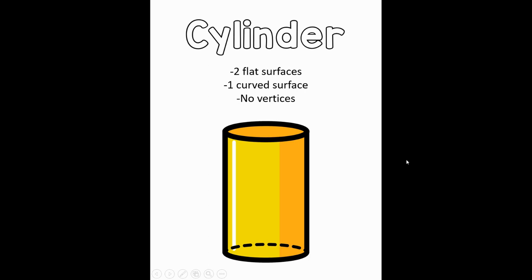The next 3D shape is called a cylinder. Can you say cylinder? A cylinder has two flat surfaces — you can see one at the top shaped like a circle and one at the bottom. And then it has one curved surface in the middle, all the way around. So this shape has no vertices but it does have both flat and curved surfaces.